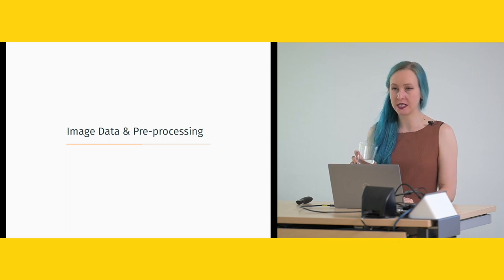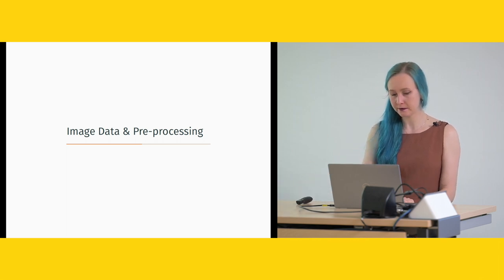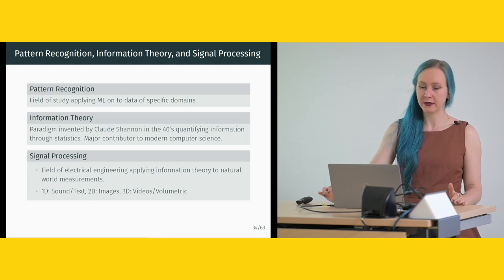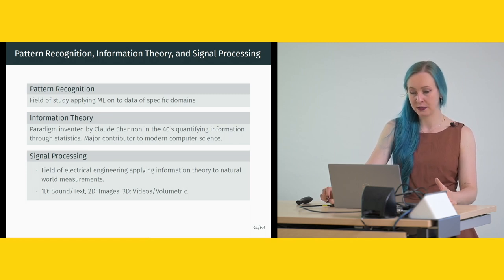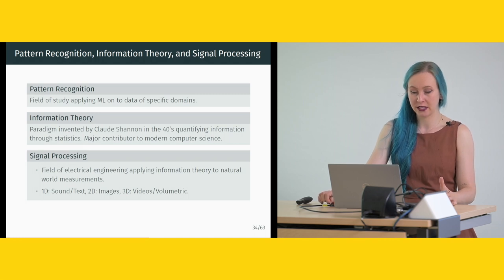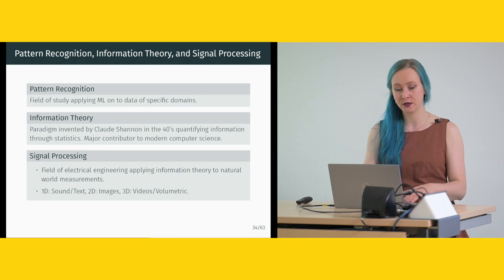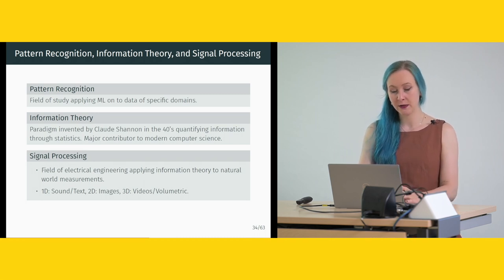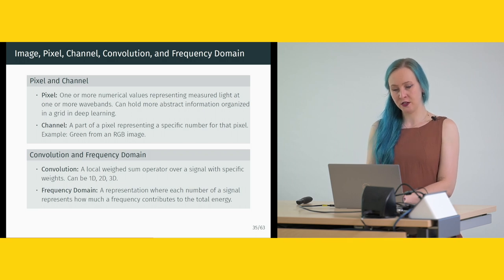There's some more information on image and data preprocessing. Just a few general terms: pattern recognition is the field of study applying machine learning on data of specific domains; information theory, invented by Claude Shannon in the 1940s, quantifies information through statistics; signal processing is a field applying information theory to natural world measurements such as sound, text, images, or videos. An image is a 2D representation of a visual scene. A pixel holds one or more numerical values representing measured light at one or more wavelength bands. A channel is part of a pixel representing a specific number, such as green from an RGB image. Convolution is a local weighted sum operator over a signal.